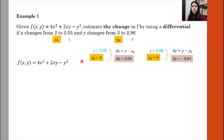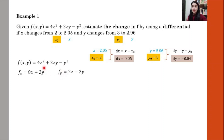Next we look at the function and find the first-order partial derivatives. Differentiating with respect to x first: the x² term gives 8x, the xy term gives 2y, and the constant gives 0. So fx equals 8x plus 2y. Then for fy, differentiating with respect to y: the first term gives 0, the xy term gives 2x, and the last term gives negative 2y. So fy equals 2x minus 2y.